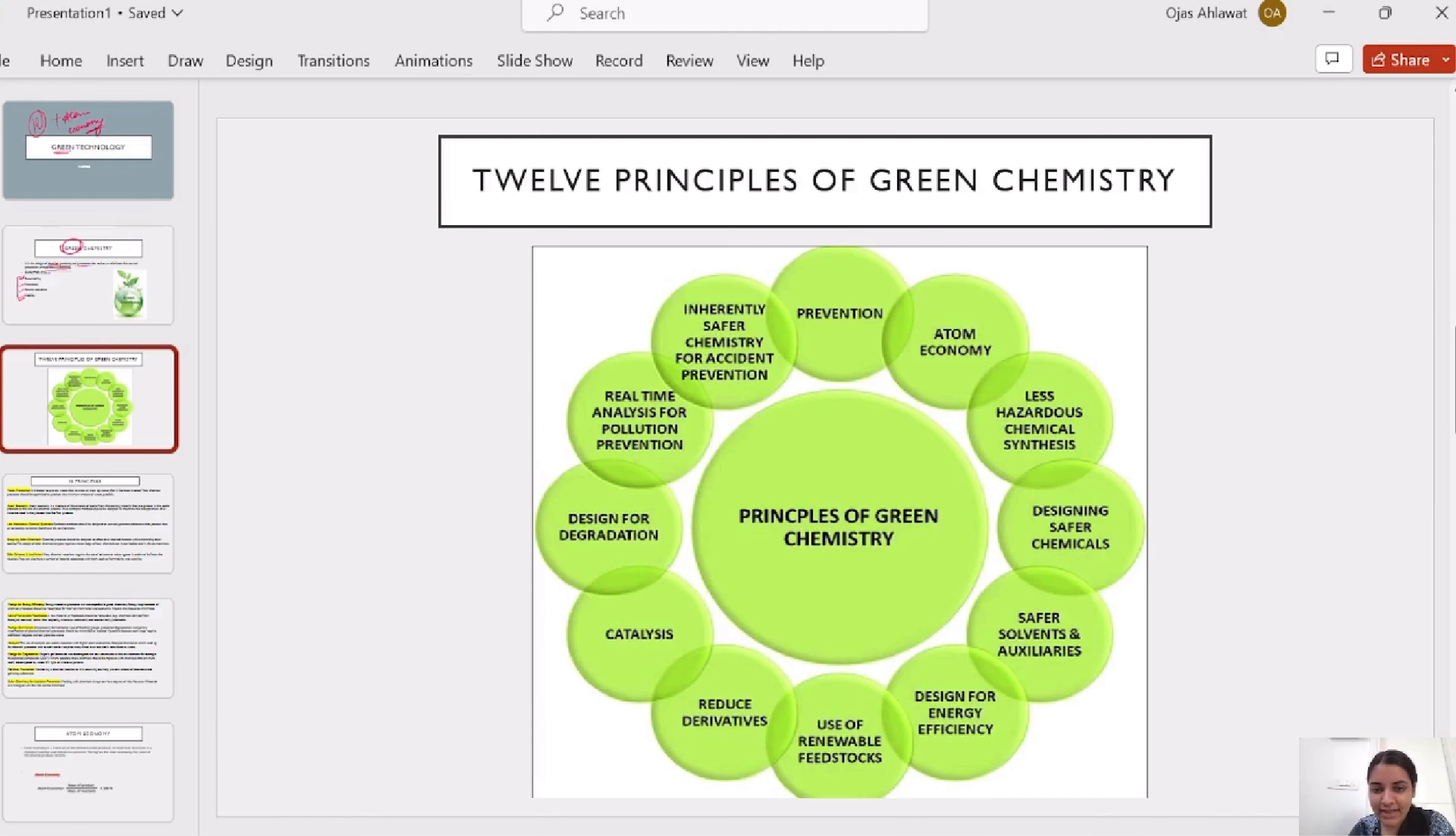What are the 12 principles? Remember, 12 principles. This question will be answered. What are prevention, atom economy, less hazardous chemical synthesis, designing safer chemicals, safer solvents, energy efficiency, renewable feedstock, derivatives, catalysts, design for degradation, real-time analysis for pollution prevention, and inherently safer chemistry for accident prevention. Now let's look at all the principles.